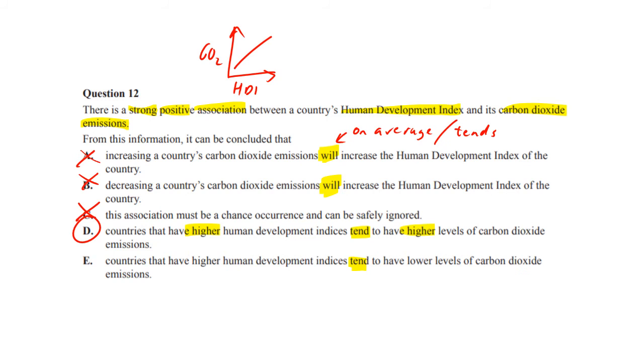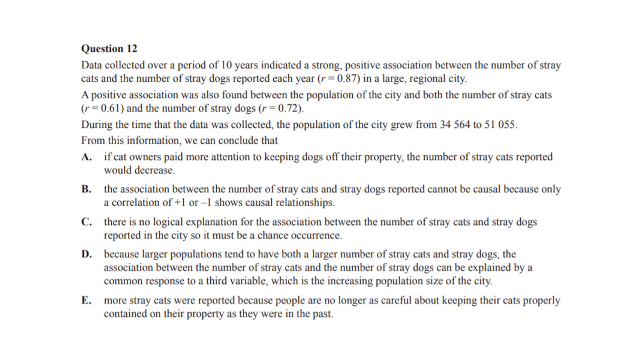But with these big wordy questions, a lot of people get freaked out and don't answer them very well. This is definitely the kind of question you should attack because other people won't attack it. Again, another big wordy one, which tends to freak out and scare people. So you should learn till you get friendly with these things so that you get that mark that other people don't. Now we've got a strong positive association between number of stray cats and number of stray dogs. All right. So they've told us that because they've given this an actual higher value, but they also said there's a positive association between a population of the city and stray cats and stray dogs. So both of those are also linked to the size of the city. All right. And we're saying that the city size has also increased over this time. So which of these statements actually works?